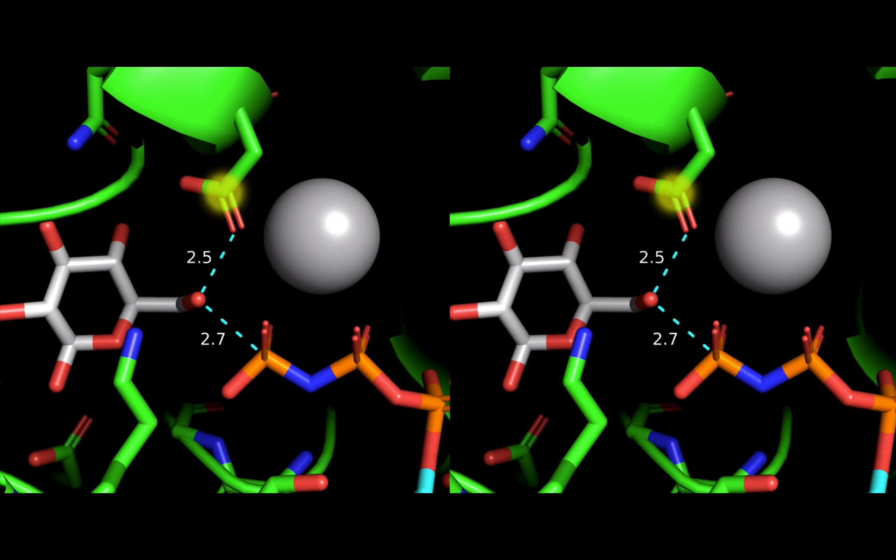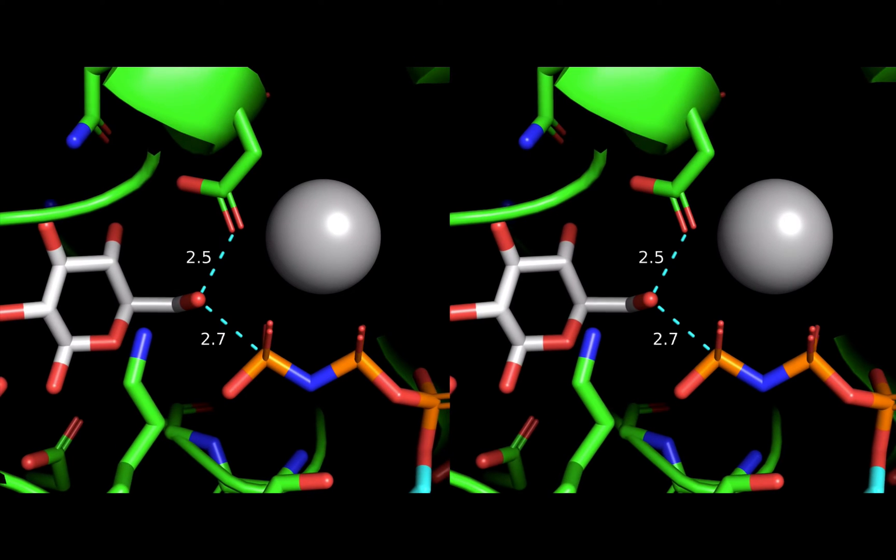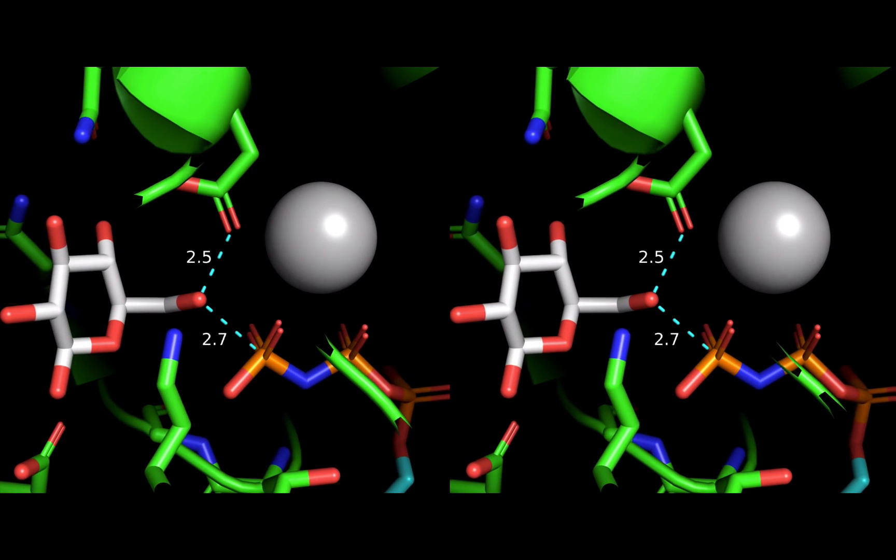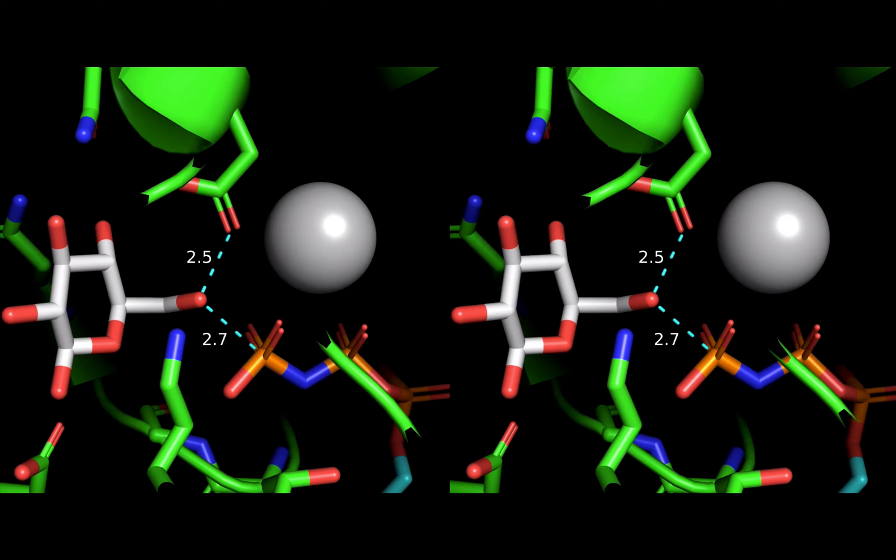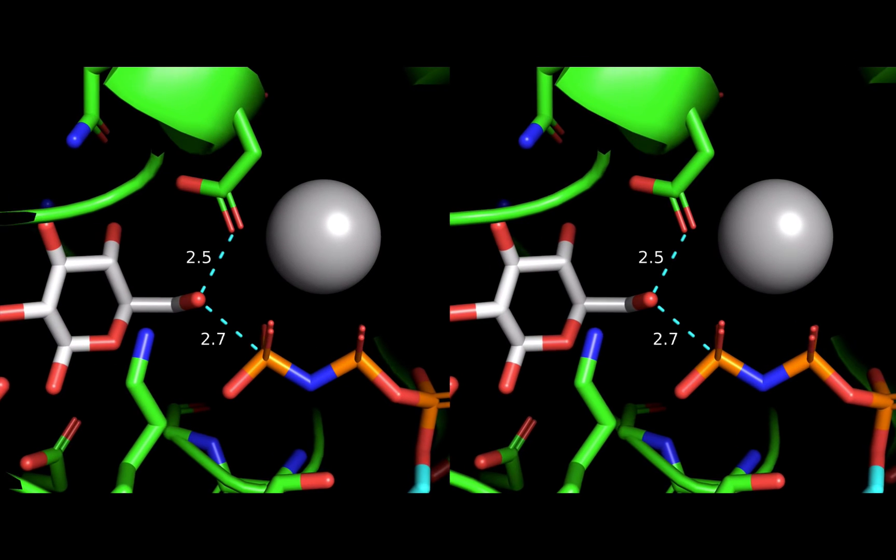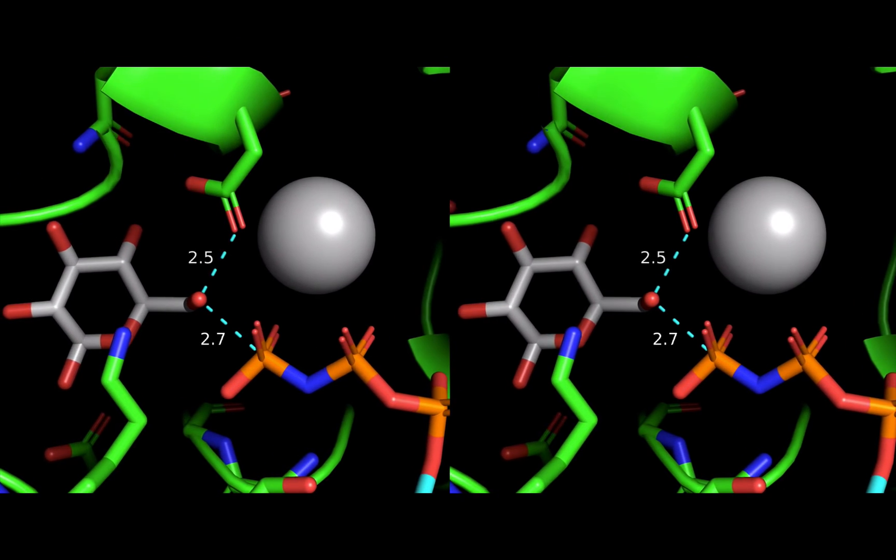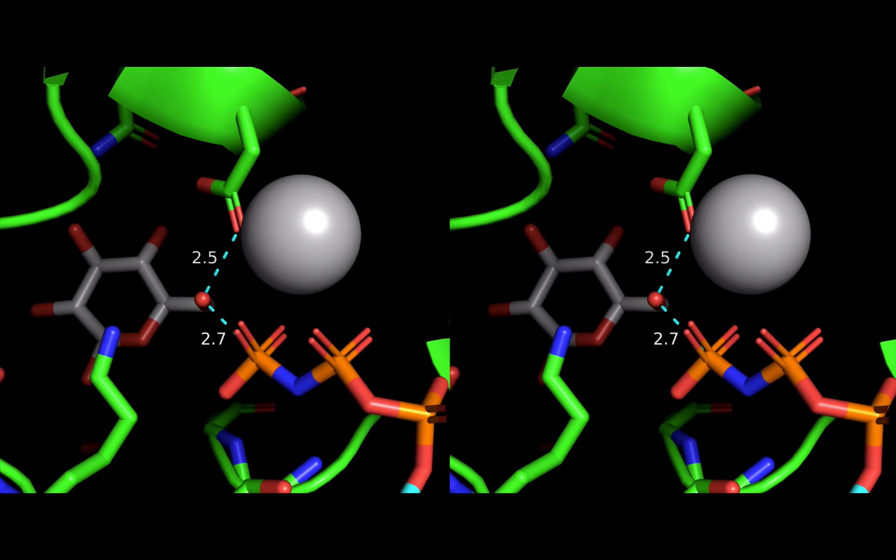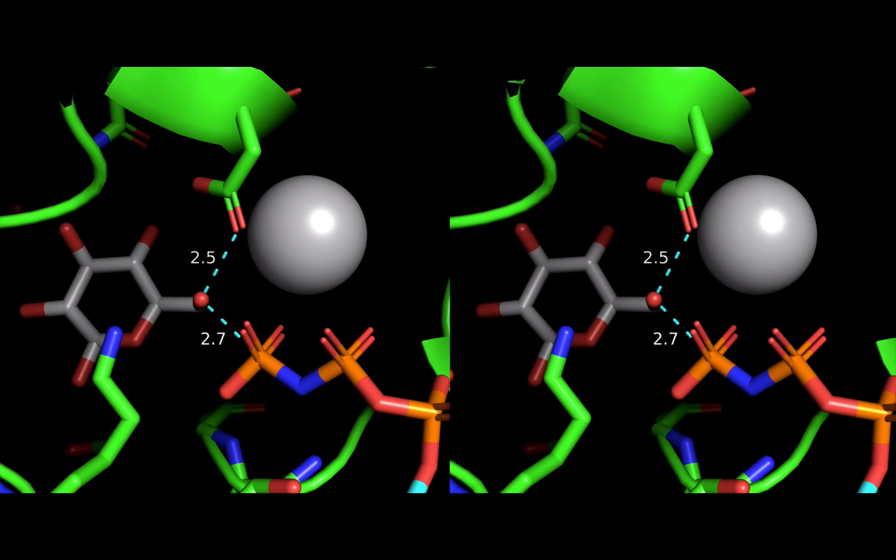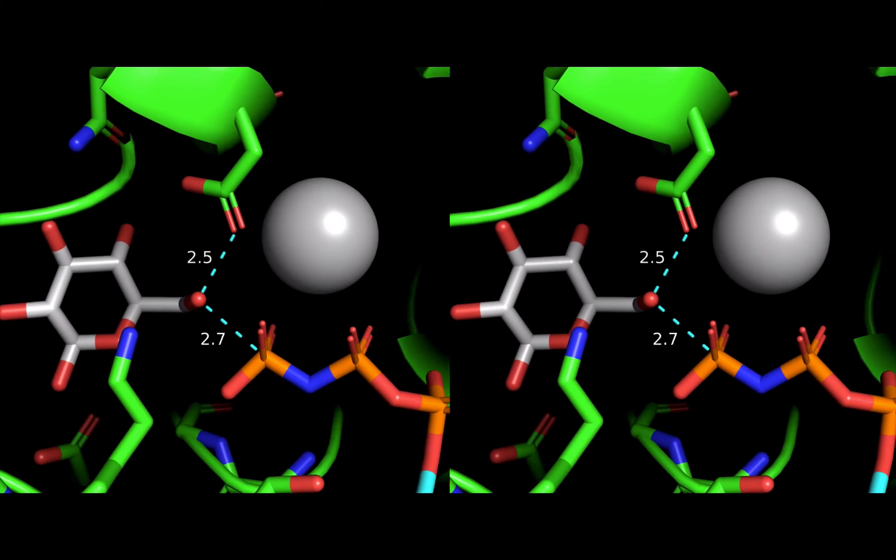Now check out this aspartate residue over here. This is an acidic amino acid and is an anion at biological pH. This is the amino acid residue that accepts the proton off of glucose, which allows it to use those electrons that are left behind to bond to the phosphate group.